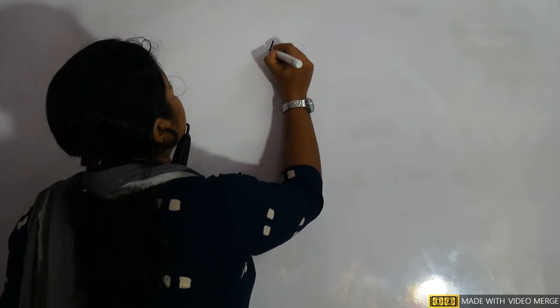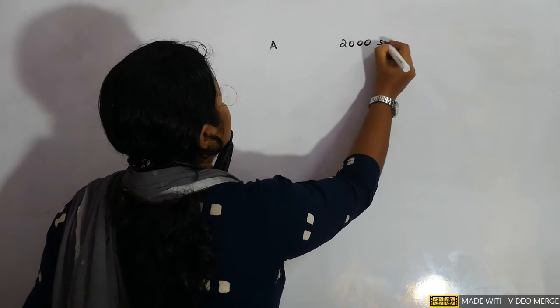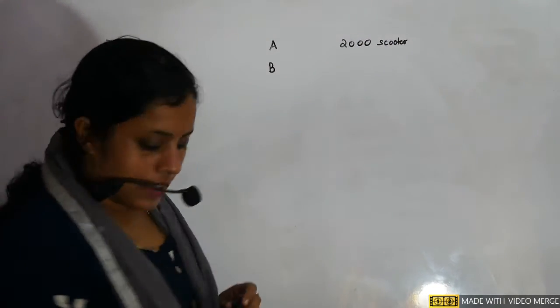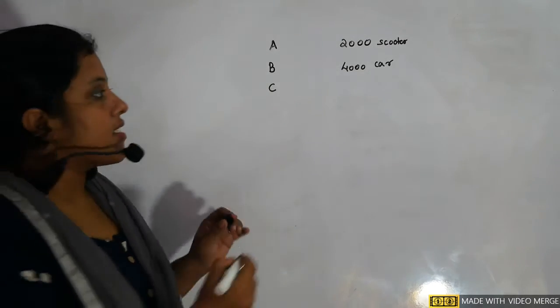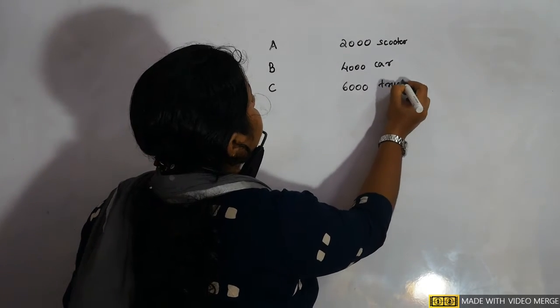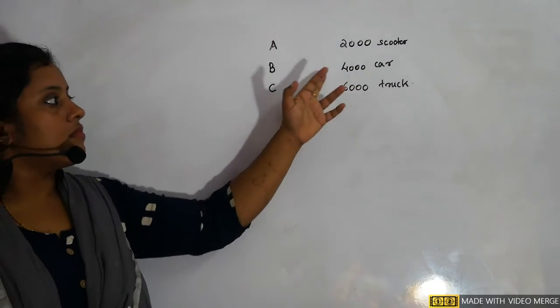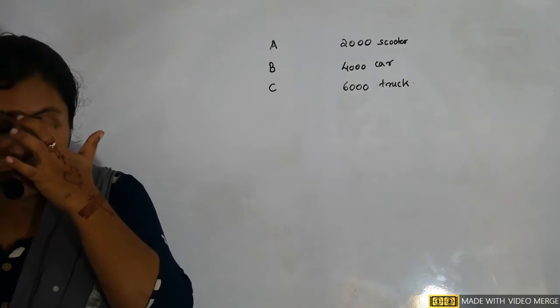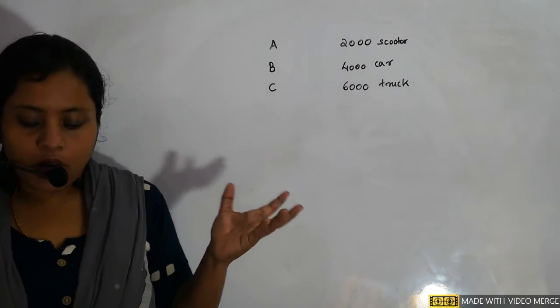An insurance company insured 2000 scooter drivers, 4000 car drivers, and 6000 truck drivers. Let A = scooter drivers, B = car drivers, C = truck drivers. The accident probabilities are: P(E|A) = 0.01, P(E|B) = 0.03, P(E|C) = 0.15.